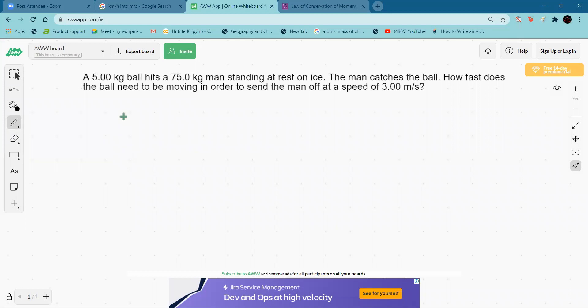For the initial momentum, we don't know the velocity of the ball, so we can take that as u, which is the initial velocity.